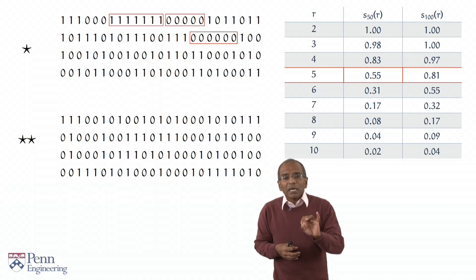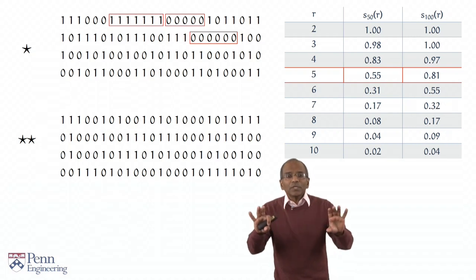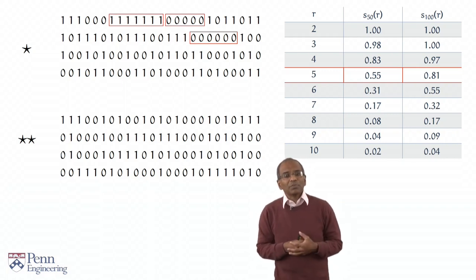The sequence labeled double star, on the other hand, looks distinctly dodgy. There is no sequence of successes or failures of length more than 4 anywhere in that sequence. And now, it will not come as a surprise to you to hear that the sequence labeled double star was the one that I made up. The sequence labeled star was what I had obtained by tossing a coin painfully, repeatedly, 100 times.